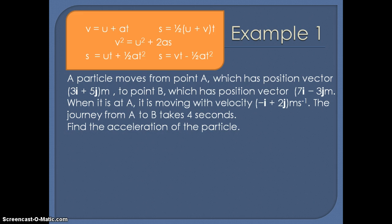So first example we've got a particle moving from point A which has position vector 3i plus 5j meters to point B which has position vector 7i minus 3j meters. When the object is at A it's moving with velocity of minus i plus 2j meters per second. And the journey from A to B takes 4 seconds. We've been asked to find the acceleration of the particle.